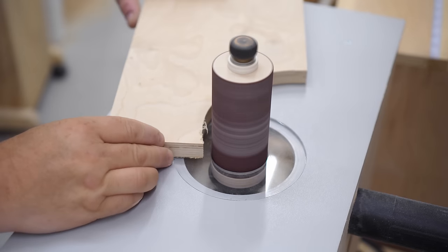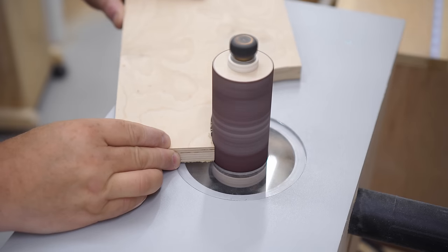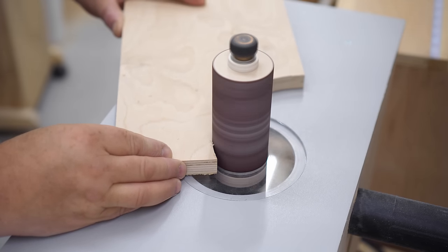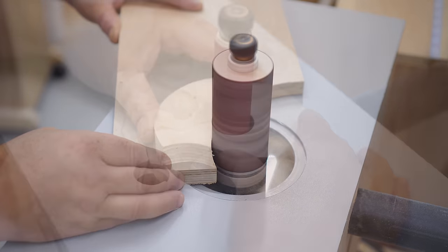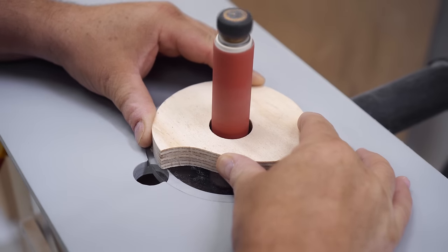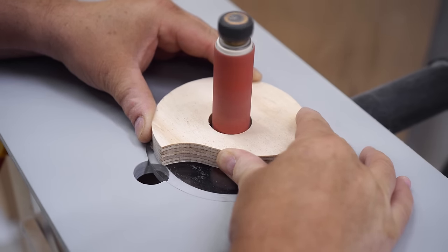At some point in the future I want to build a spindle sander from scratch, and while it looks like that's what I'm using right now, this is actually one that I rebuilt. I mainly did that so I could put larger drums on there.